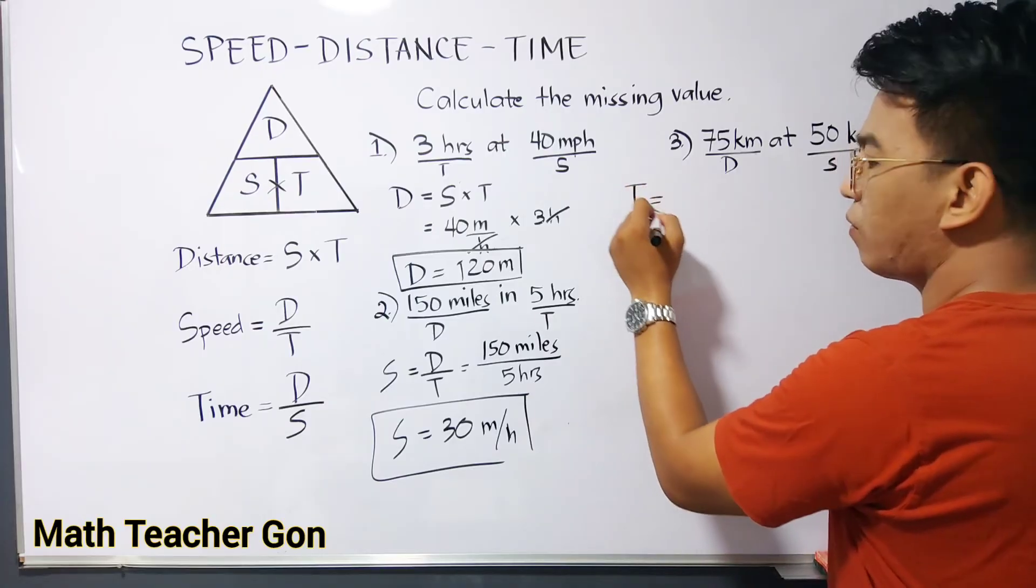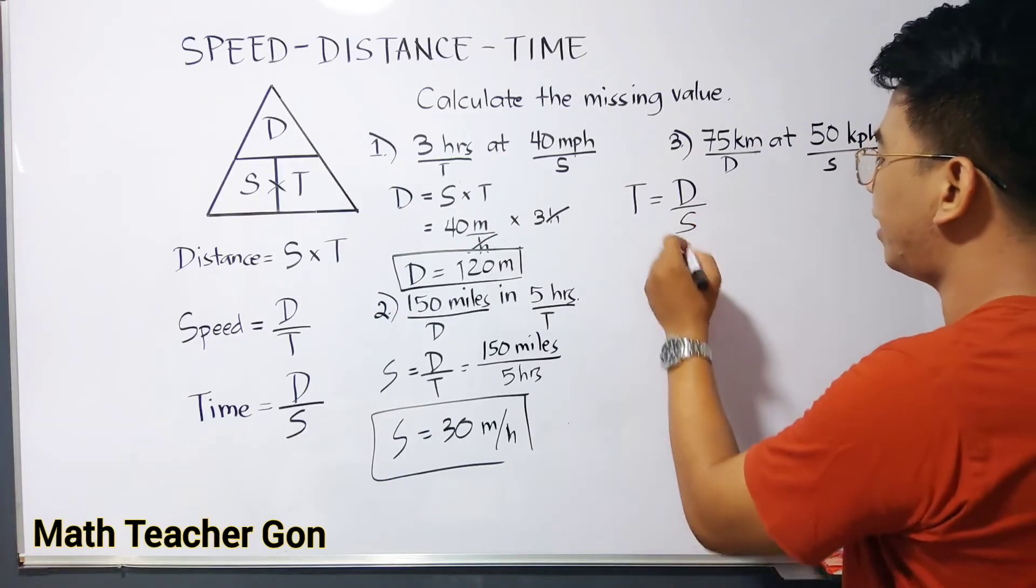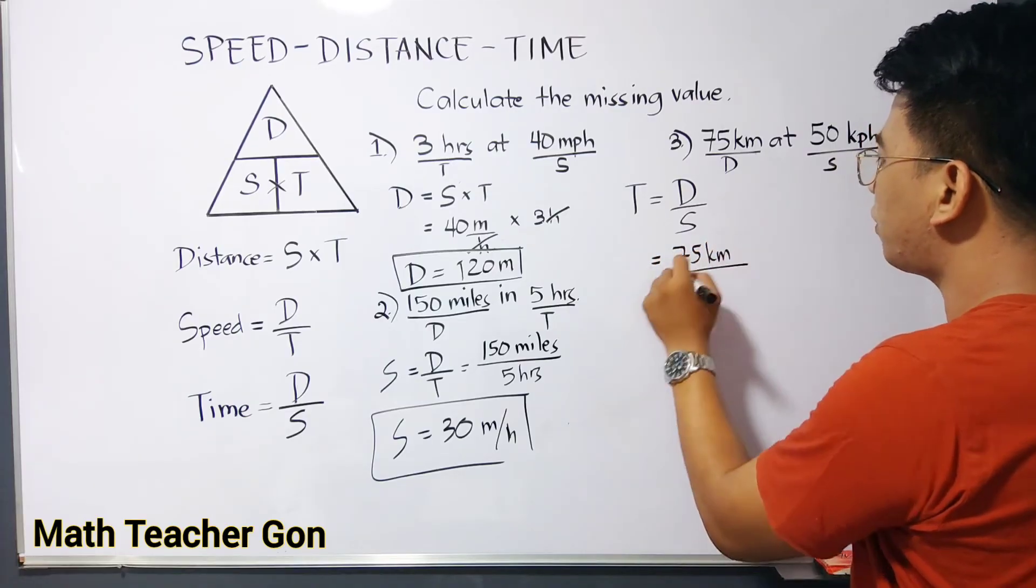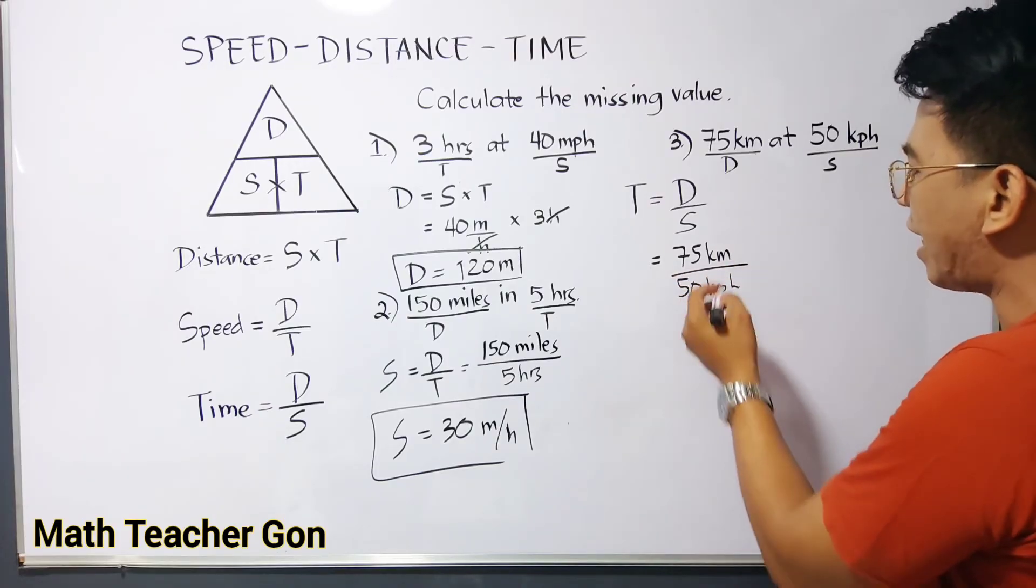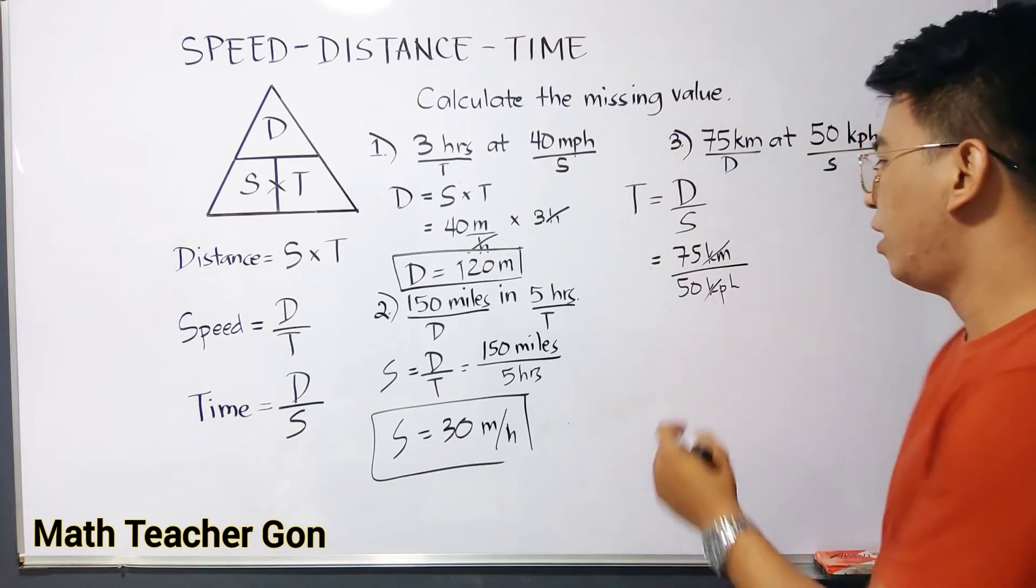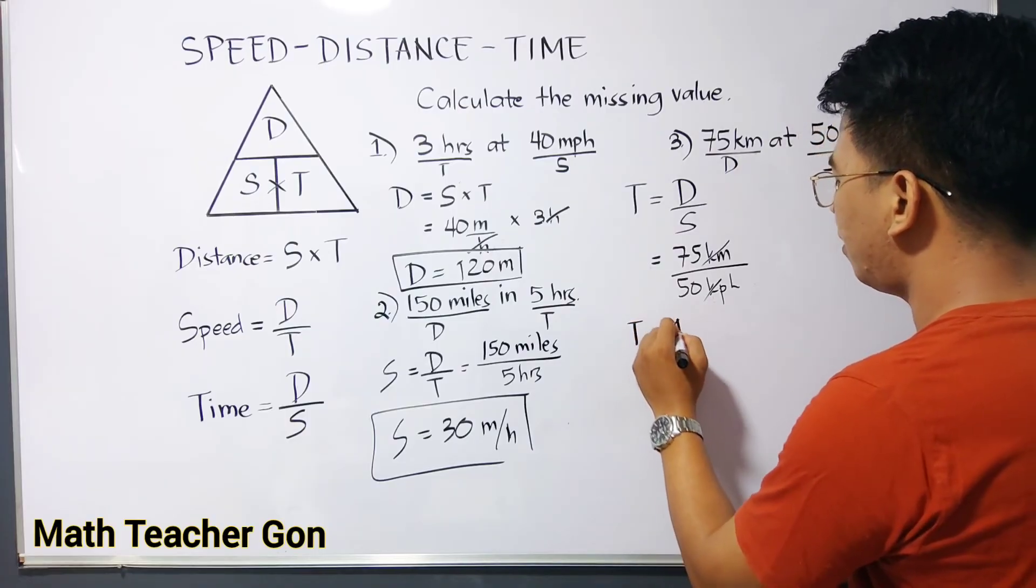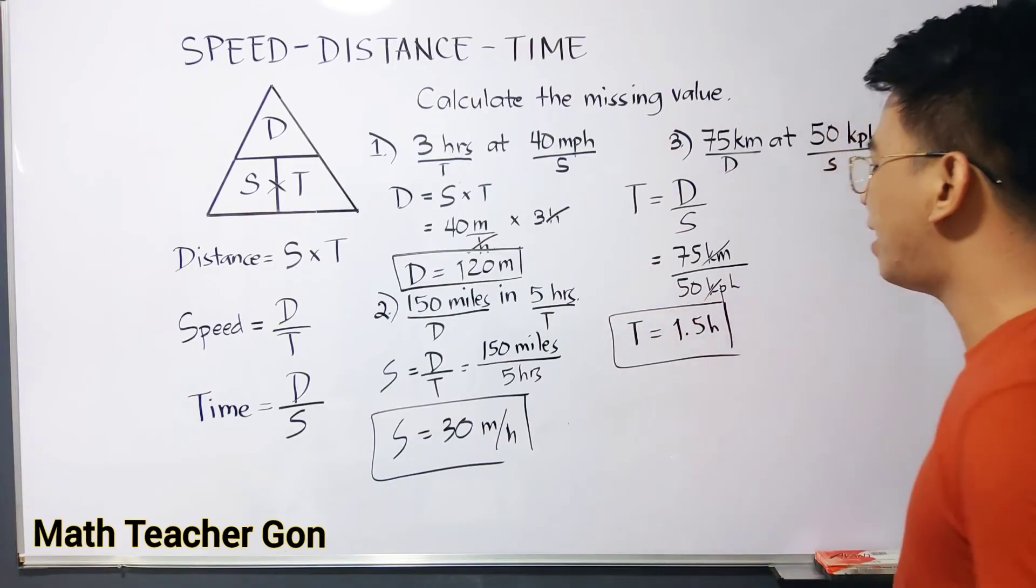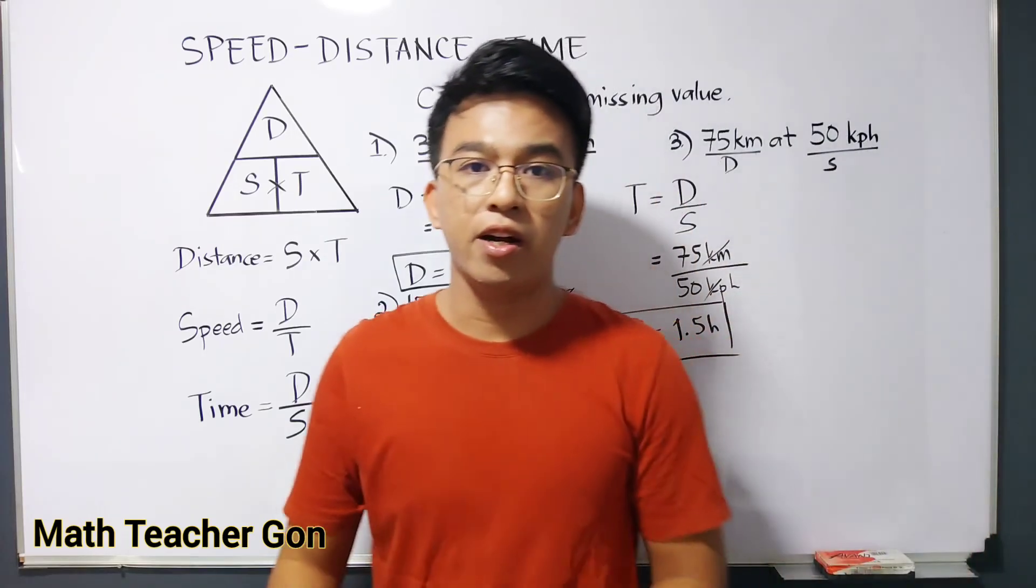Your time is equal to distance over speed. So we will substitute the value of 75 kilometers for the distance. That would be 75 kilometers over your speed, which is 50 kilometers per hour. So we can eliminate your kilometer, and what will remain is the unit of hour. And dividing 75 by 50, your time or the value of your time is 1.5 hours as the answer. This is the travel time if you have 75 kilometers at 50 kilometers per hour as your speed.